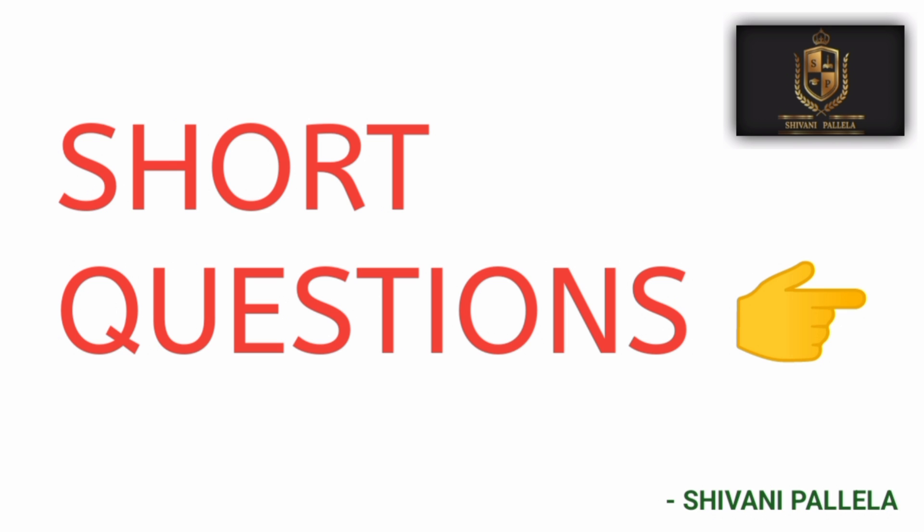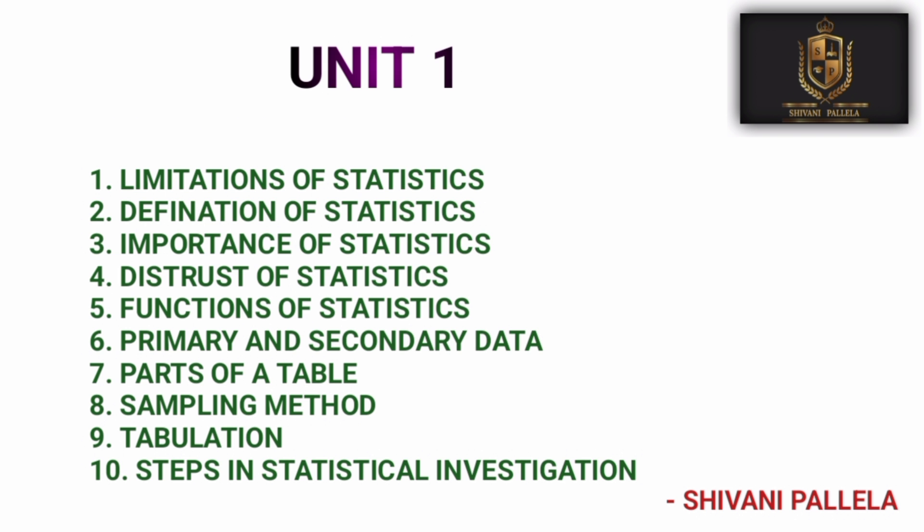For short questions, if you are writing theory in Part A, try to write side by side two pages in your answer booklet. For Unit One, I have given 10 important short questions — Unit One is only theory. Questions include: limitations and disadvantages of statistics, importance of statistics, definition of statistics. If you learn the concept of statistics, you can answer all these questions. Also, why people have distrust of statistics — because statistics is a prediction tool and does not always give accurate data.